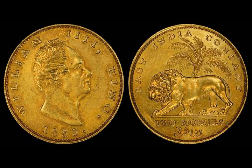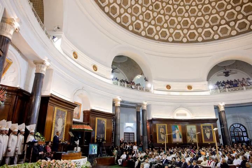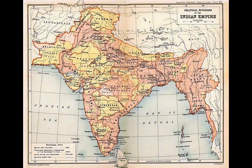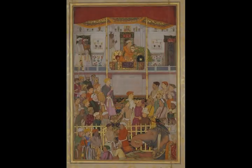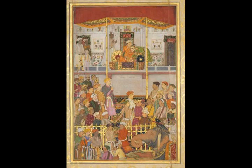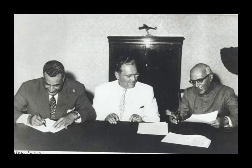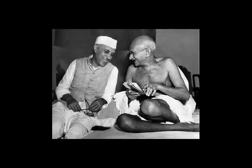India is a federation with a parliamentary system governed under the Constitution of India, the country's supreme legal document. It is a constitutional republic and representative democracy, in which majority rule is tempered by minority rights protected by law. Federalism in India defines the power distribution between the Union and the states. The Constitution of India, which came into effect on the 26th of January 1950, originally stated India to be a sovereign, democratic republic; this characterization was amended in 1971 to a sovereign, socialist, secular, democratic republic. India's form of government has grown increasingly federal since the late 1990s as a result of political, economic, and social changes.